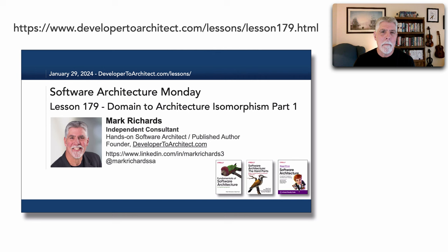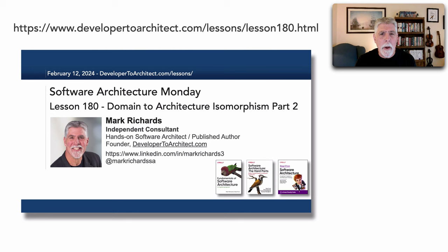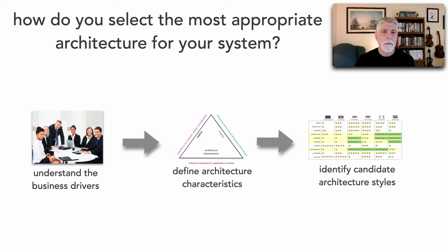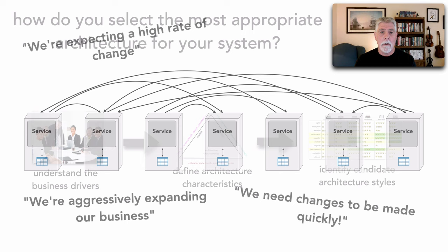We saw in lesson 179 how focusing just on characteristics of particular architecture styles can lead to some epic failures. Then in lesson 180 we saw the shape of eight different kinds of architecture styles and when to use them and when not to use them. In this lesson I'd like to bridge these two to show you some examples of applying the shape of a problem to the shape of an architecture.